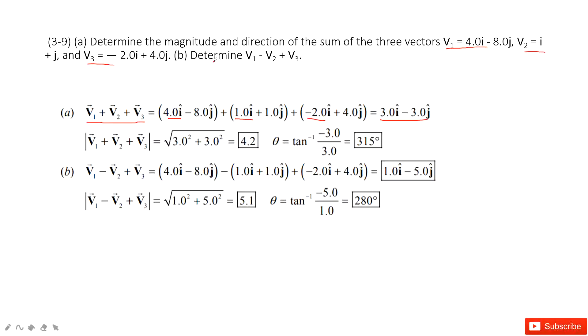Similarly, when we want to do calculation for part b, V1 subtract V2 plus V3, we still do calculations for these three vectors in i component and j component. So the final vector is this one.